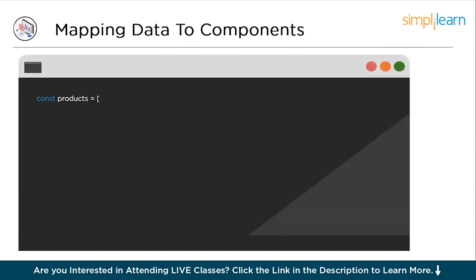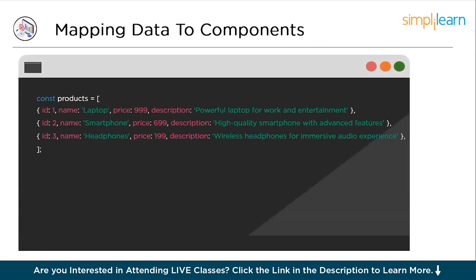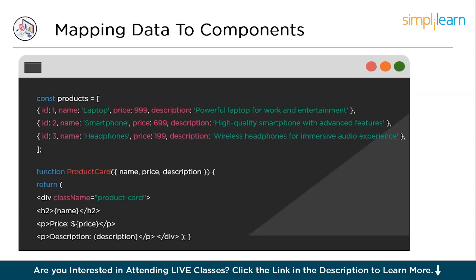Suppose we have an array of products where each product is represented by an object containing information such as name, price, and description. Additionally, we have a product card component that is responsible for rendering each product as a card on a webpage. The map function in React is like a handy tool that helps us deal with a list of items such as an array of products — it's a bit like having a conveyor belt where each product comes along one after the other.